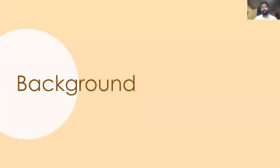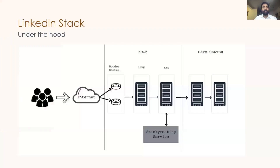Let me take you through the background of what the LinkedIn stack looks like and how LinkedIn traffic routing works. Whenever a member navigates to www.linkedin.com, they connect to one of our POPs — points of presence — using geo DNS. These POPs are the link between members and our data centers. POPs consist of IPVS, which is IP Virtual Servers, and ATS, which is Apache Traffic Server, acting as a proxy between members and the data centers.